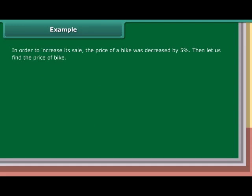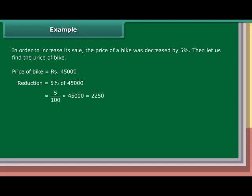In order to increase its sale, the price of a bike was decreased by 5%. Let us find the price of the bike now. Price of the bike is Rs. 45,000. Reduction equals 5% of Rs. 45,000, which equals Rs. 2,250. New price equals Rs. 45,000 minus Rs. 2,250, which equals Rs. 42,750.